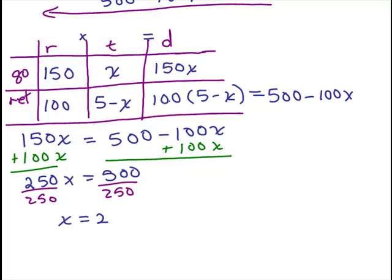Now what did X stand for? Look at the chart up here. Here's where we defined X. It was the time going. So the return, well if it's a total of 5 hours, if the time going was 2, then the return trip would be 3 hours to get a total of 5 hours.